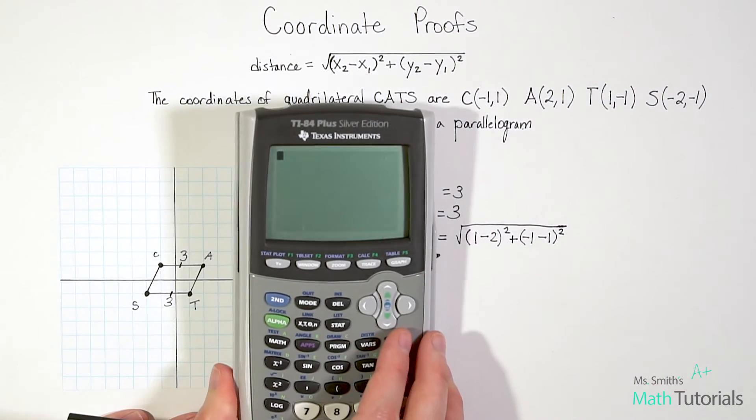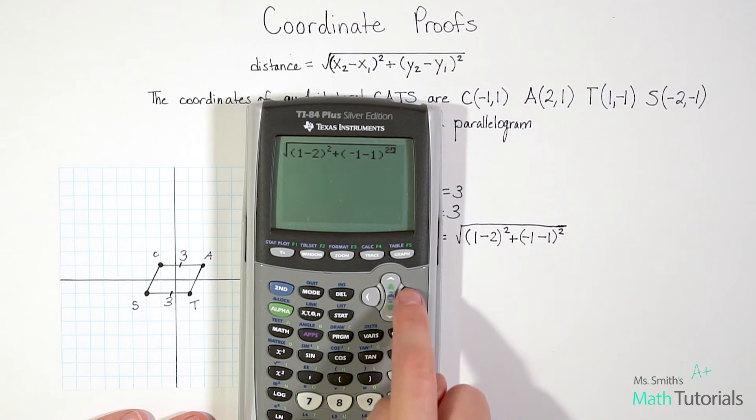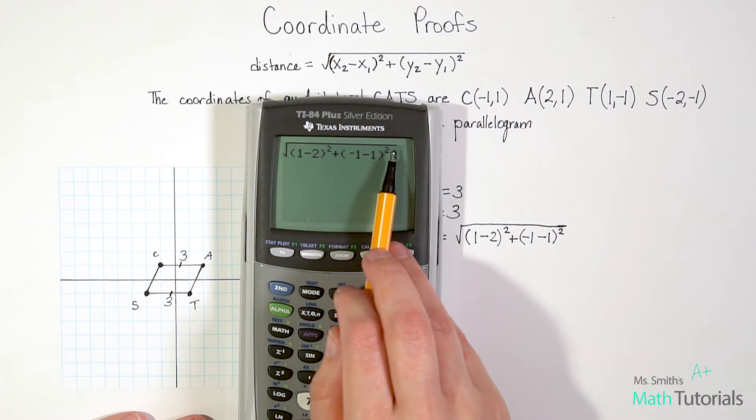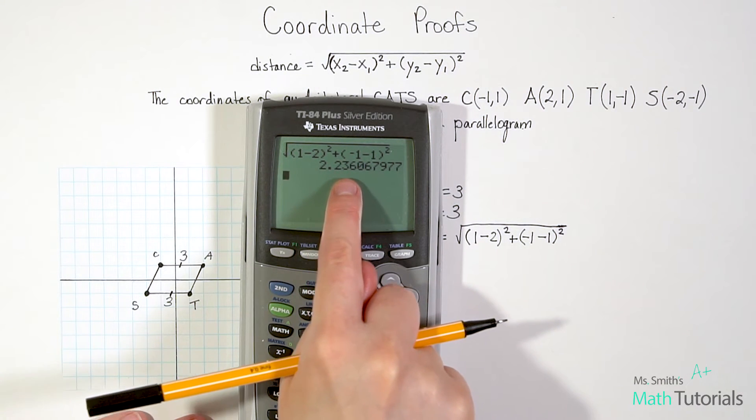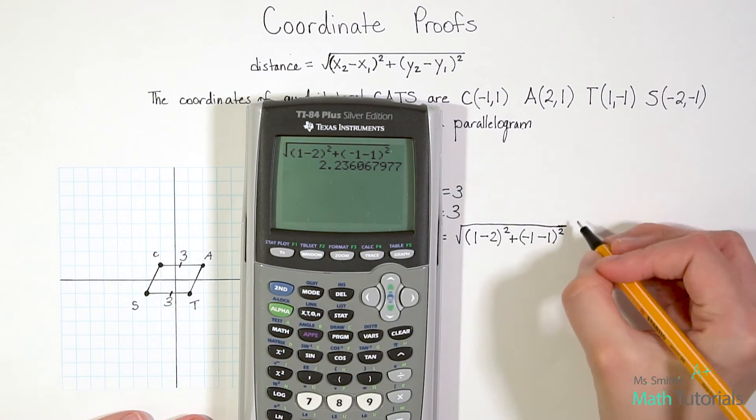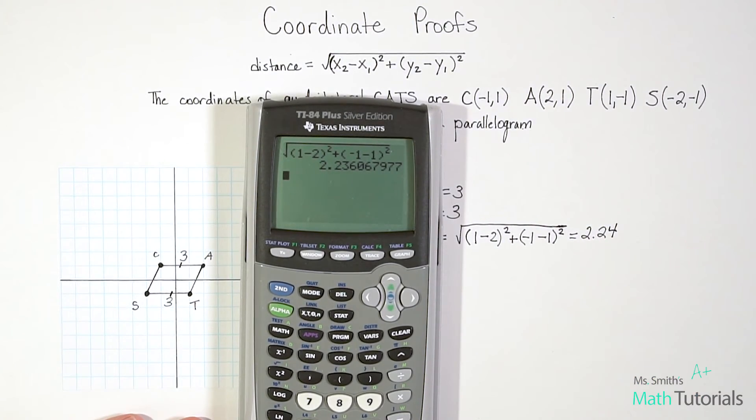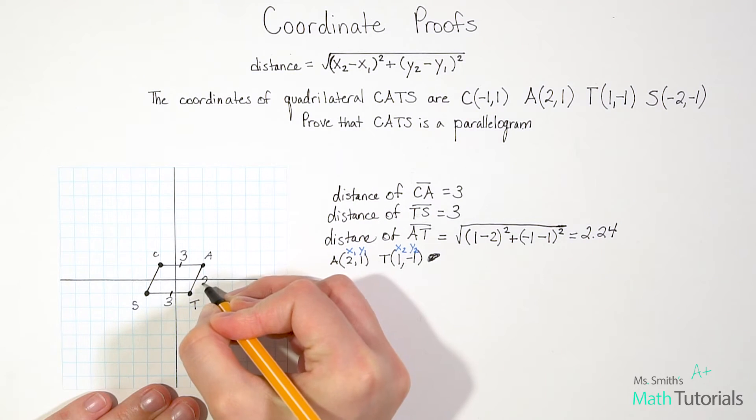This is where you're going to want to bring in your calculator to speed up some time. Could we do that by hand? Absolutely. But let's save some time. So let's do square root of parentheses, 1 minus 2 squared, plus negative 1 minus 1 squared. And we'll hit enter. Make sure that your radical is going all the way to the end. Very important. Okay, so we've got a really long decimal. We're going to round to the nearest hundredth and say 2.24. So now that we've got our distance of AT, we're going to note it on here. It's 2.24.